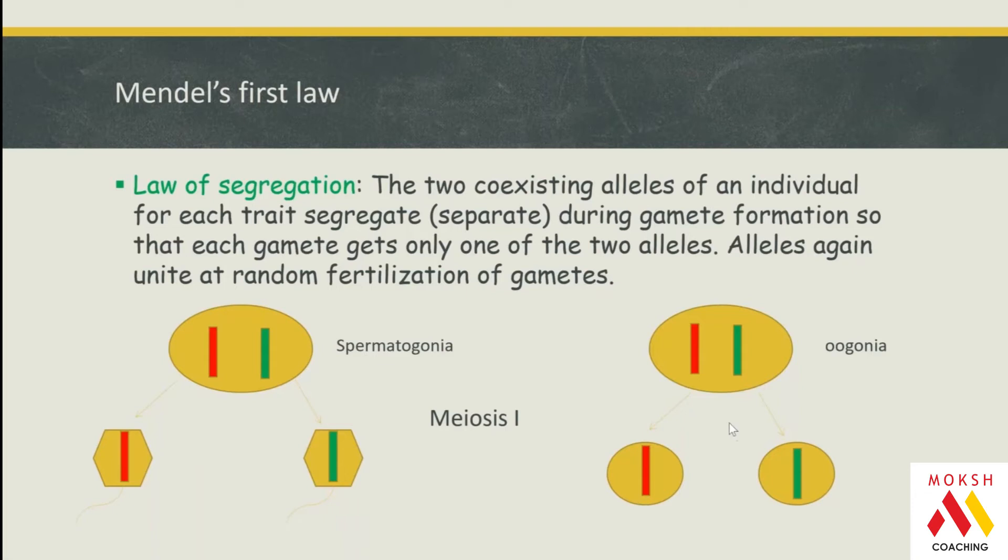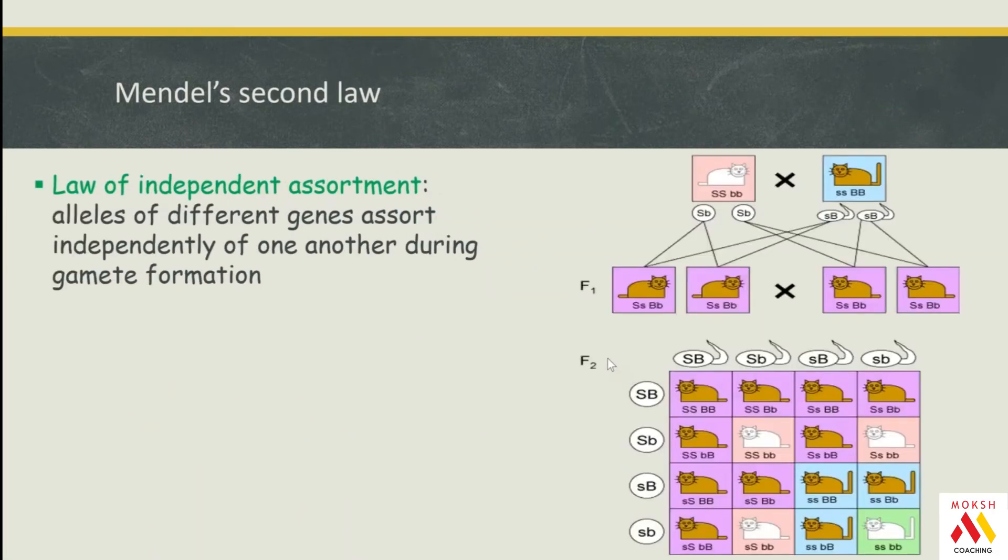The second principle is the law of independent assortment. We talked about a particular chromosome—there could be thousands of loci with thousands of genes. Locus one and locus two could move simultaneously together or be separated as well. Again, Mendel got lucky here. He compared two characteristics which are present on the same chromosome. If you're comparing two loci which are very close to each other...